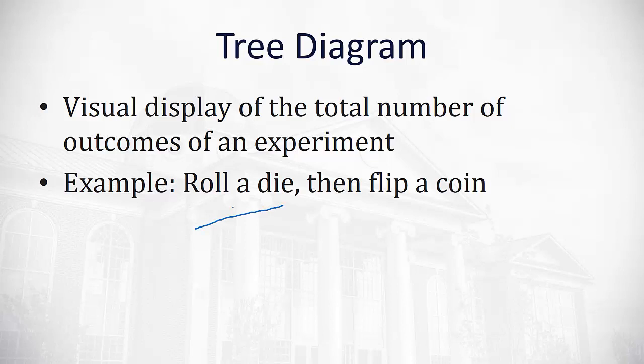First we roll a die, we could get a one, we could get a two, we could get a three, we could get a four, we could get a five, or we could get a six. After rolling the die, we flip a coin.